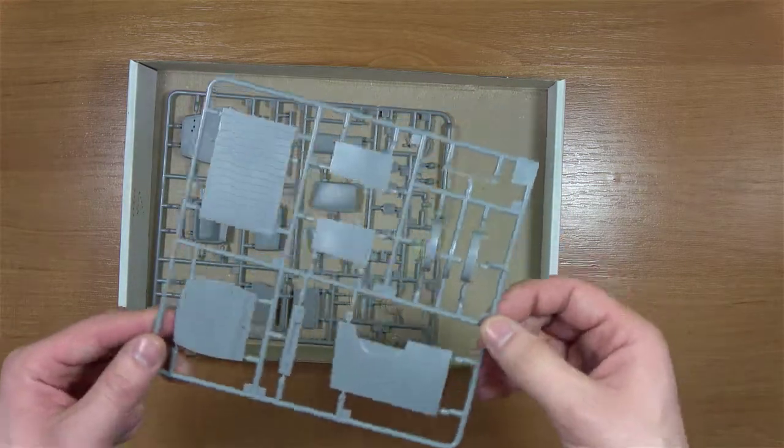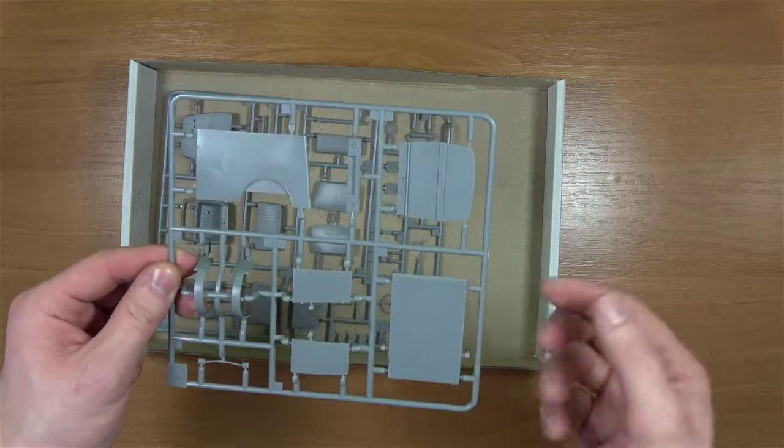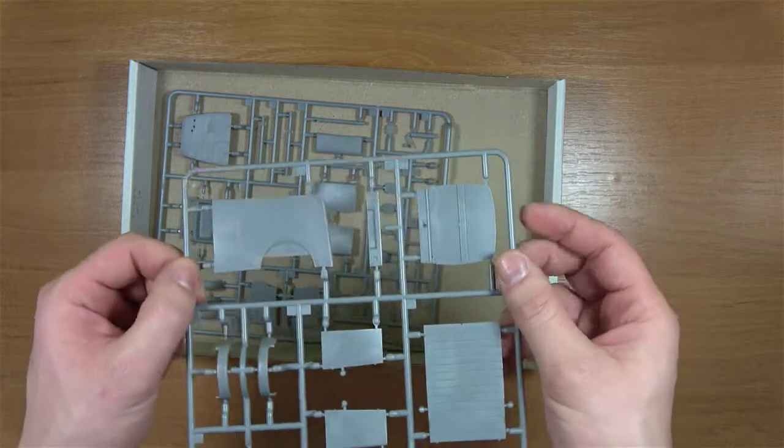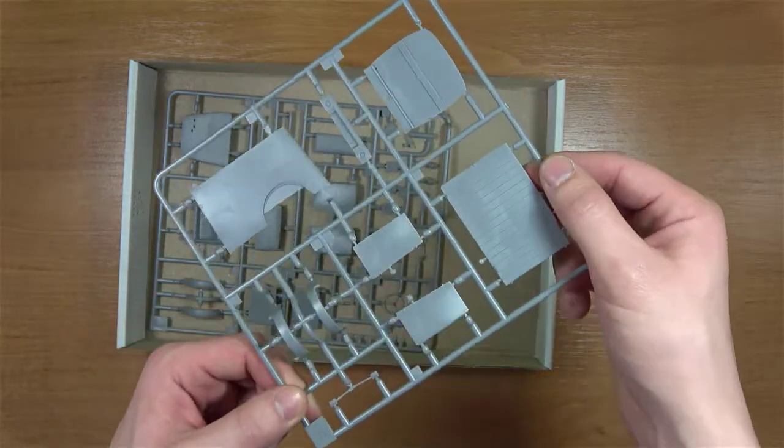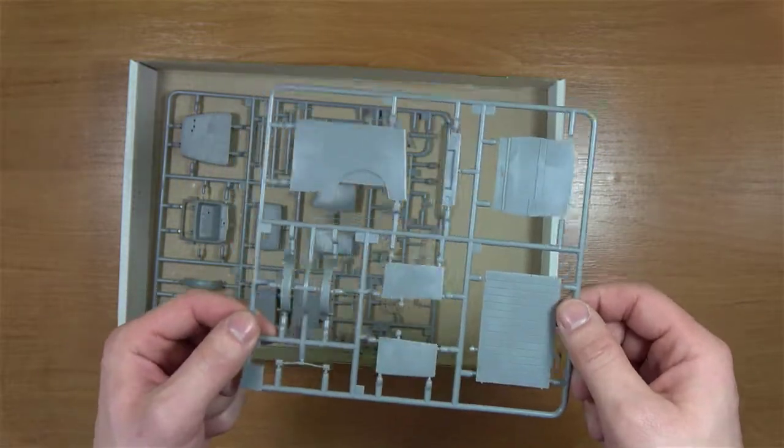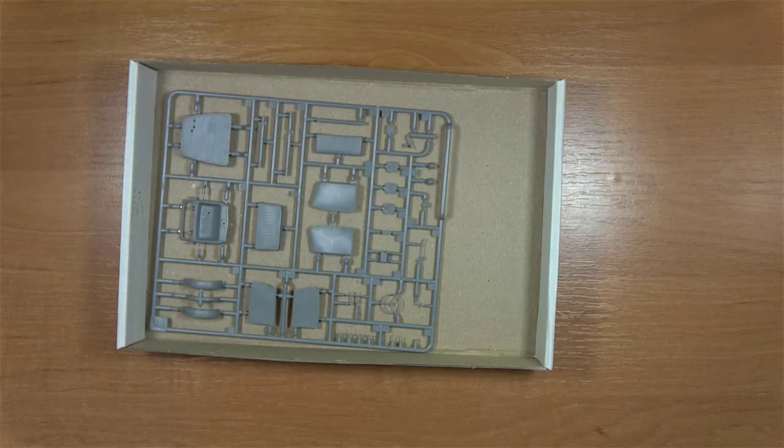Kolejna ramka to tak naprawdę elementy paki. Tutaj mamy szoferkę. Kolejny bok to chyba są nadkola, drzwi. I ogólnie model wydaje się w swoim budowie dosyć prosty.